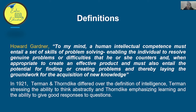Howard Gardner talks about multiple intelligences and says that human intelligence must entail a set of skills of problem solving, enabling the individual to resolve genuine problems or difficulties encountered, and when appropriate to create an effective product. It must also entail the potential for finding or creating problems, thereby laying the groundwork for the acquisition of new knowledge. This means intellectual competence, problem-solving skills, creating solutions, and generating new knowledge are all part of intelligence.